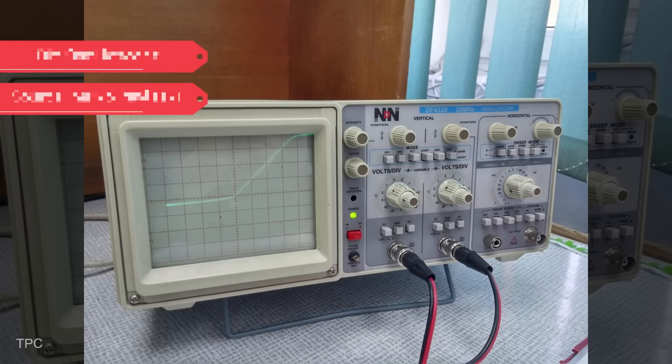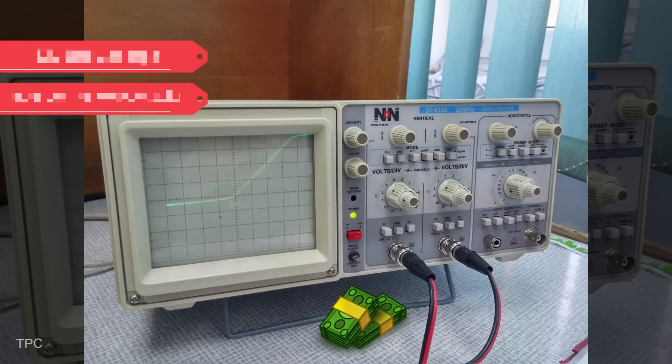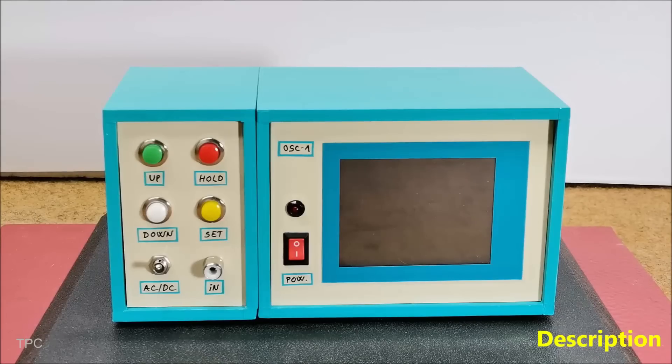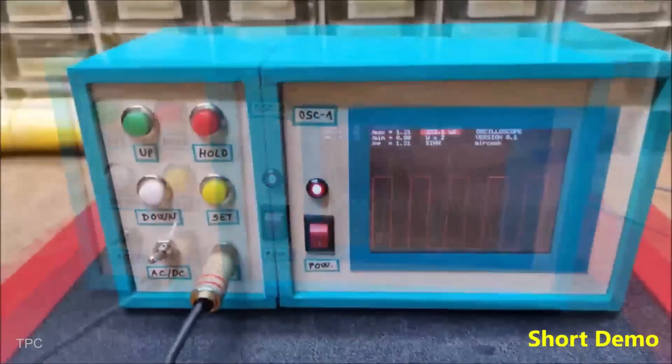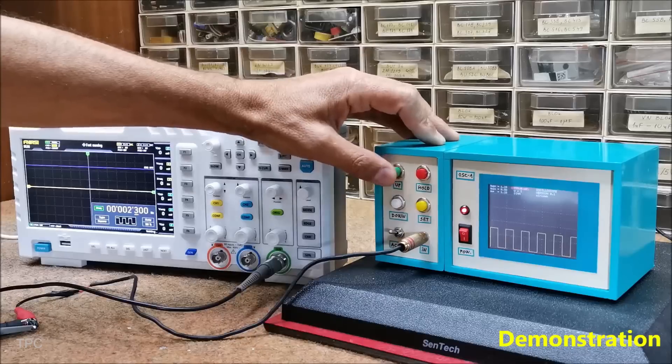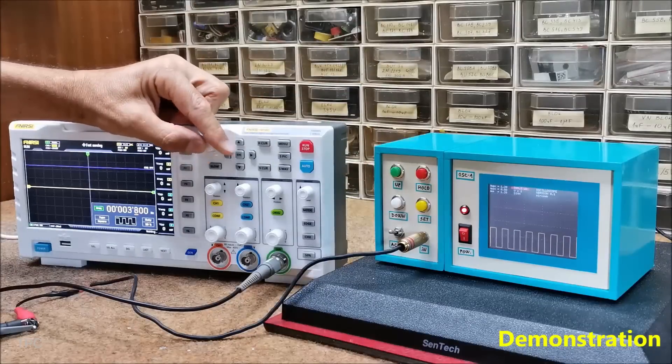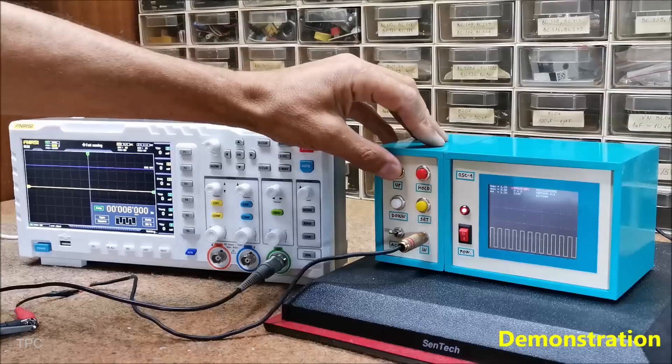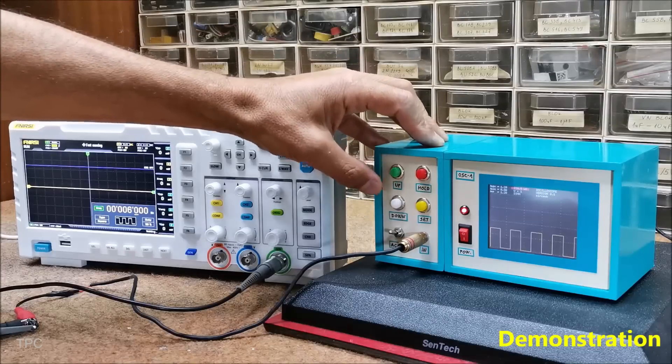Number 8. Most commercial oscilloscopes found online are expensive, but this DIY project shows how you can build one at a much lower cost. With this project, you can observe signals up to 500 kHz, making it helpful to visualize and analyze electronic signals.